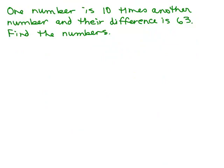Next problem: one number is 10 times another number, and their difference is 63. Find the numbers. We're looking for two different numbers, so let's begin by writing, we're going to define the first number, and we're going to define a second number.